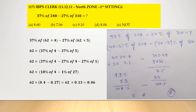We can also solve this problem another way. 37% = (40 − 3)% and 27% = (30 − 3)%. Writing terms to add on one side and subtract on the other: 40% of 248 = 4 × 24.8, plus 3% of 310 = 3 × 3.1; minus 3% of 248 = 3 × 2.48, plus 30% of 310 = 3 × 31. Solving gives approximately 8.